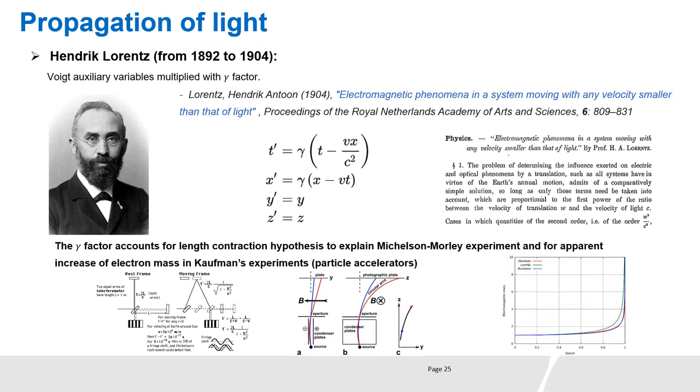In 1904, Lorentz multiplied Voigt's auxiliary variables with the gamma factor. For Lorentz, the gamma factor accounts for his length contraction hypothesis in order to explain the results of Michelson-Morley experiments. The gamma factor accounts also for the apparent increase of the electron mass in Kaufmann's experiments.